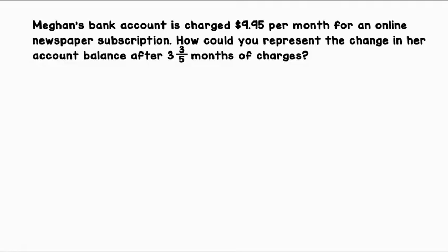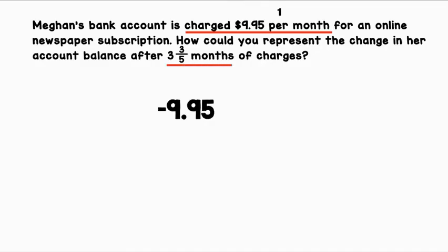Megan's bank account is charged $9.95 per month for an online newspaper subscription. How could you represent the change in her account balance after 3 and 3/5 months of charges? She is charged $9.95 per month — 'per' means 1, so this is the cost for 1 month. Since she is paying that, we can represent it with negative 9.95. We're looking for her account balance change over 3 and 3/5 months, so let's multiply by 3 and 3/5.